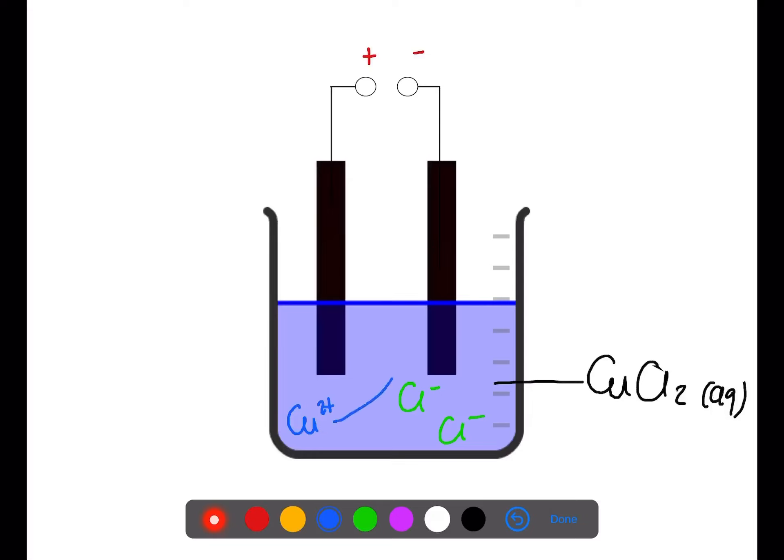The copper 2 plus ions will be attracted to the negative electrode. At the negative electrode, the copper 2 plus ions will pick up 2 electrons and become copper solid. This means that we will see a brown solid forming on the electrode.